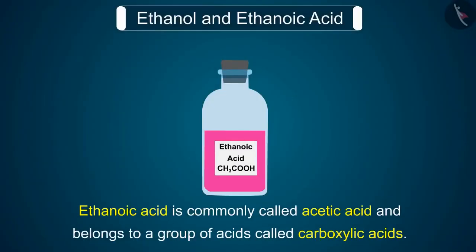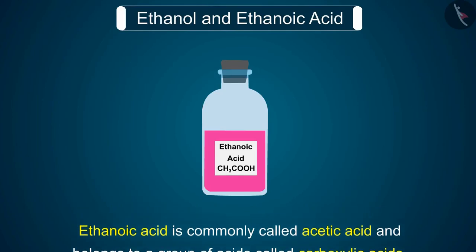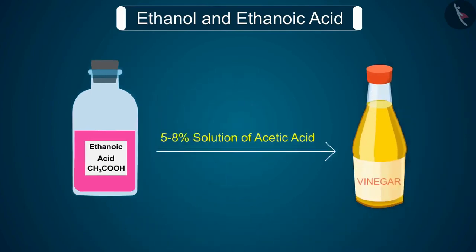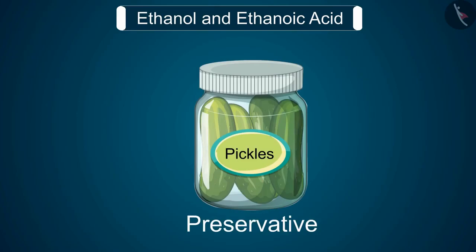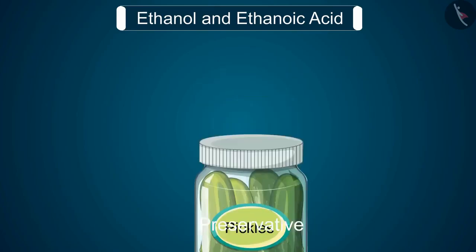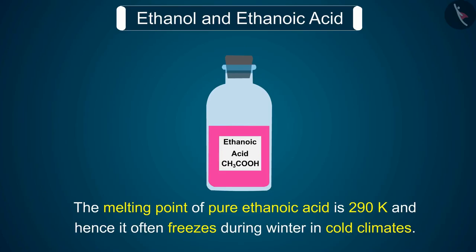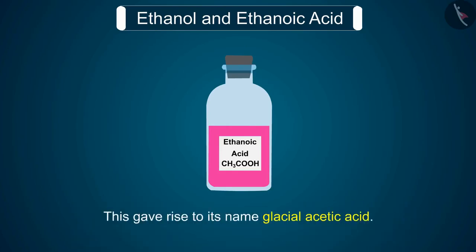Ethanoic acid is commonly called acetic acid and belongs to a group of acids called carboxylic acids. A 5–8% solution of acetic acid in water is called vinegar and is used widely as a preservative in pickles. The melting point of pure ethanoic acid is 290 K and hence it often freezes during winter in cold climates, giving rise to its name glacial acetic acid.